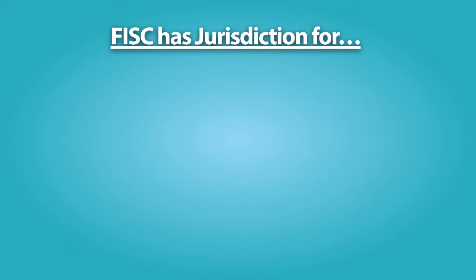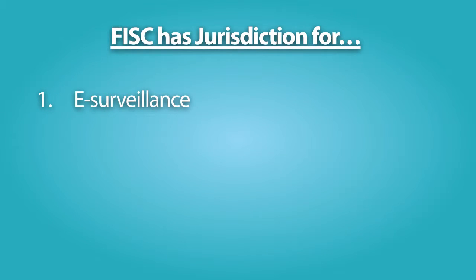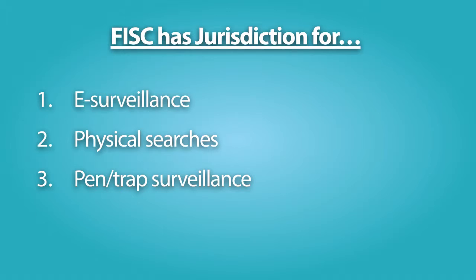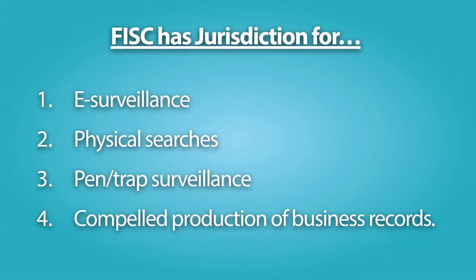The FISC has jurisdiction to hear applications for and issue orders authorizing four traditional activities authorized under FISA: electronic surveillance, physical searches, pen or trap surveillance, and compelled production of business records.